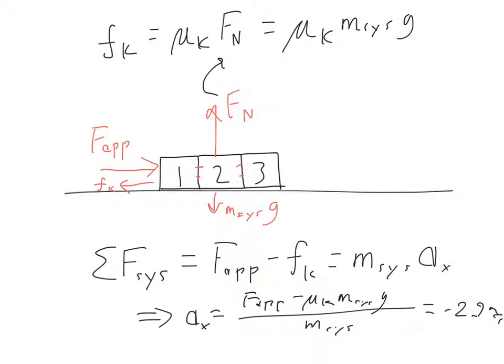If we know what the acceleration of each block is, maybe we can now go back, use the free body diagrams we had before, and figure out how much all the forces in magnitude are for each piece. For simplicity, I'm going to start with the third block because it has the fewest number of forces acting on it, so it might be the easiest to solve.